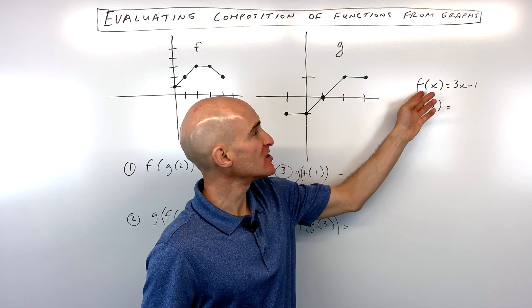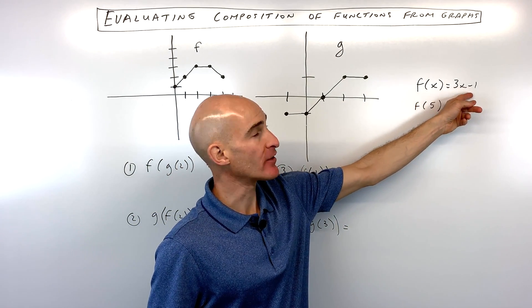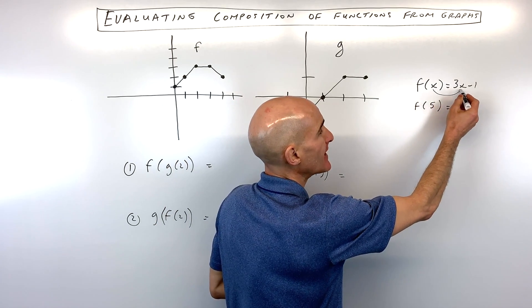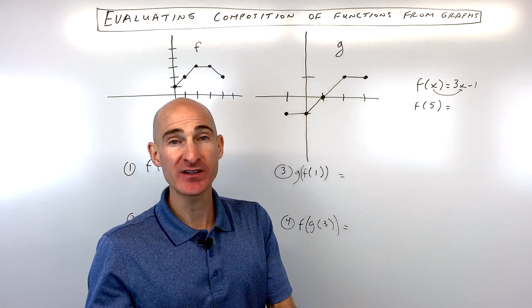A function is something that's written in this notation here, such as f of x equals 3x minus 1. And what this represents is that whatever's in the parentheses, you're going to put in place of x on the right side of the equation.